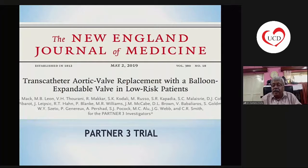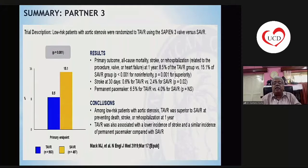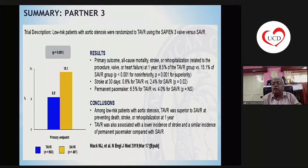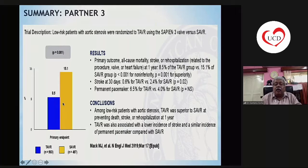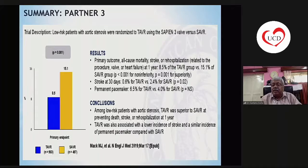The PARTNER-3 trial randomized low-risk patients with aortic stenosis to TAVR using a Sapien-3 valve versus SAVR. The primary outcome was all-cause mortality, stroke, or re-hospitalization related to the procedure, valve, or heart failure at one year. The primary endpoint was significantly lower in the TAVR arm — 8.5% versus 15.1% in the SAVR arm. Among low-risk patients with aortic stenosis, TAVR was superior to SAVR in preventing death, stroke, or re-hospitalization at one year, with a lower incidence of stroke and similar incidence of permanent pacemaker.